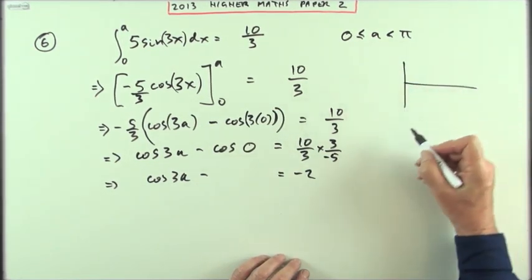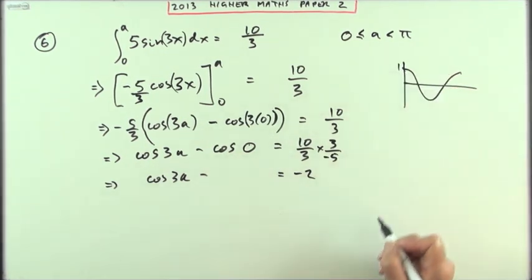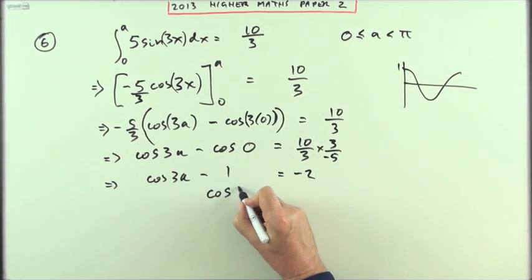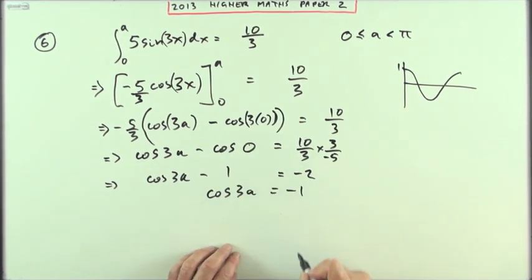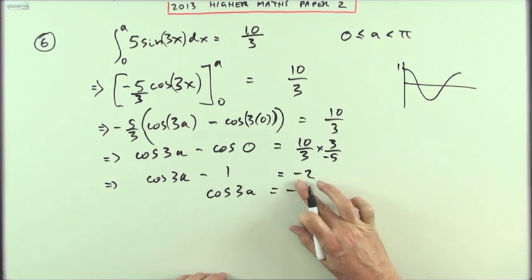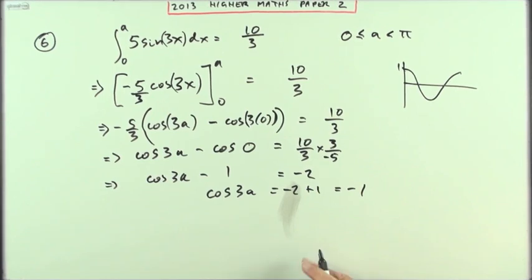Now let's have a little graph here, cosine graph, that's going to look like that. Cosine at 0, that's 1, so that's just minus 1. So now I'm down to cos 3a equals, take that 1 across and add, and we'll make it negative 1. Well I'll set that out. Negative 2 plus 1, which equals negative 1.